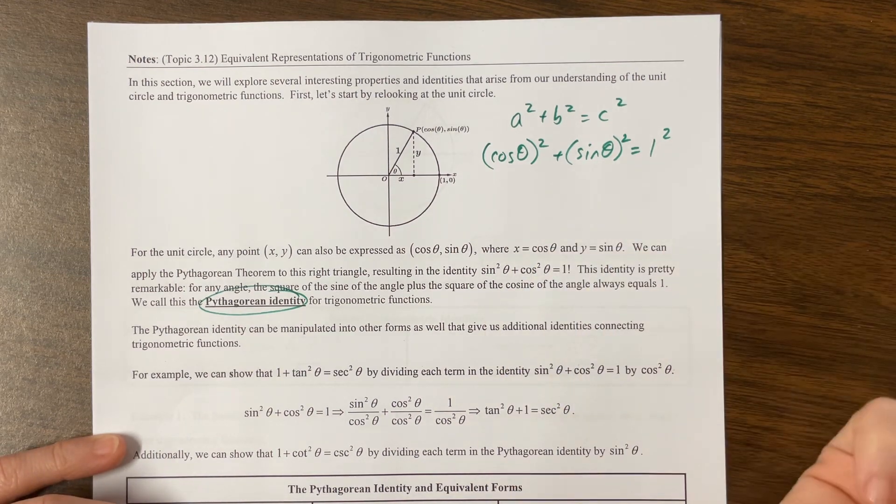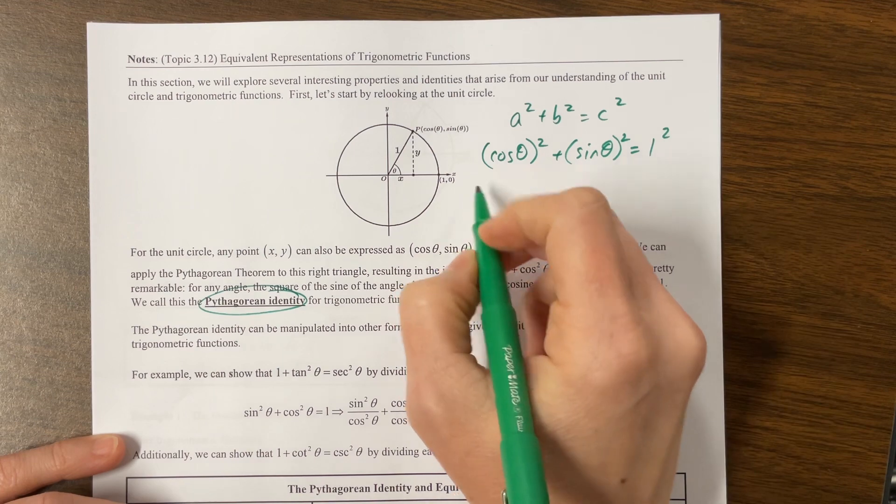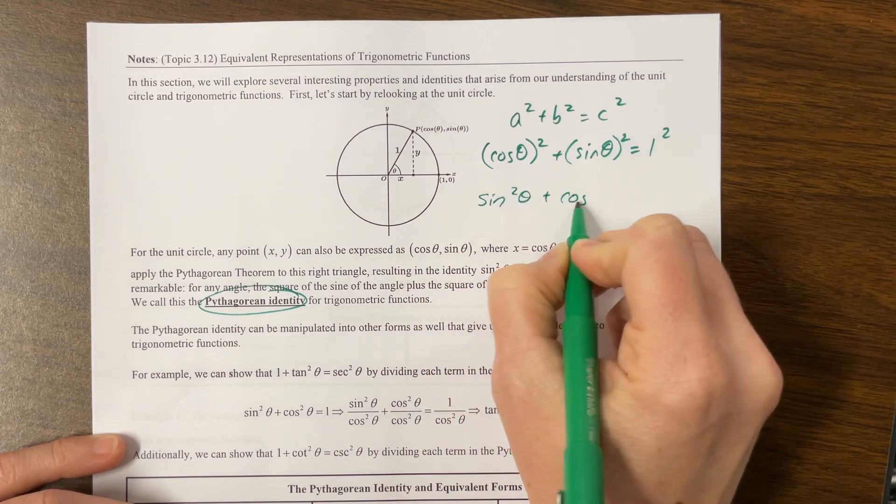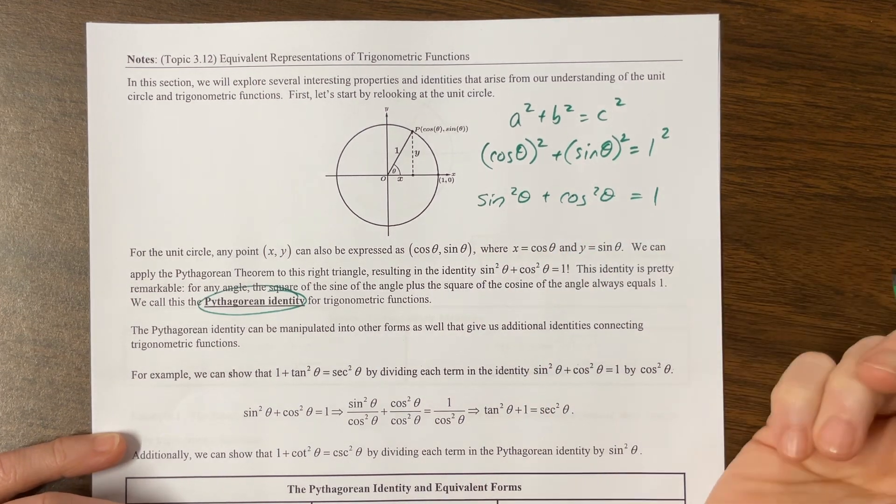But we can write this a little more concisely. I typically write the sine value first, so we can say sine squared plus cosine squared theta, always include your variable, sine squared plus cosine squared equals 1.